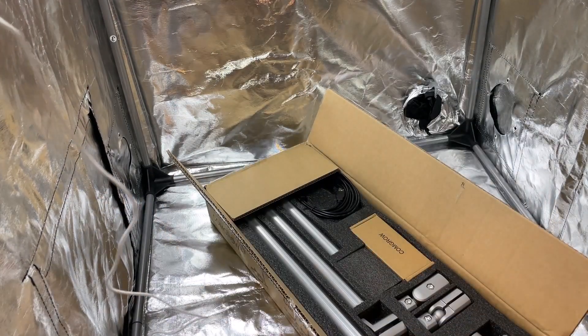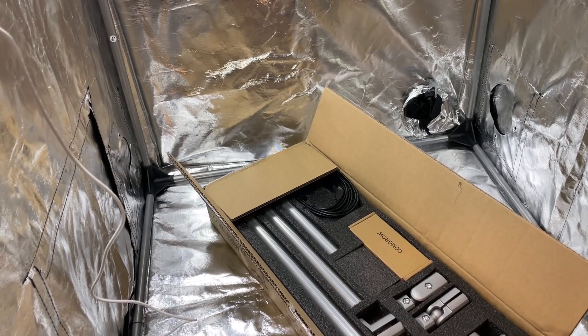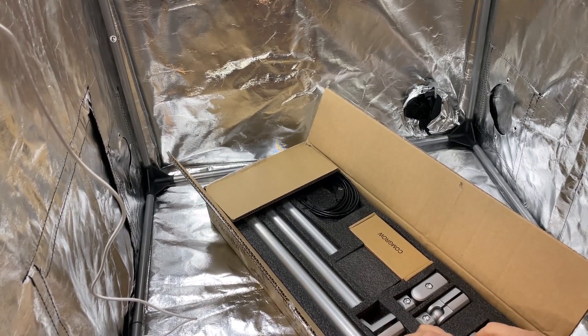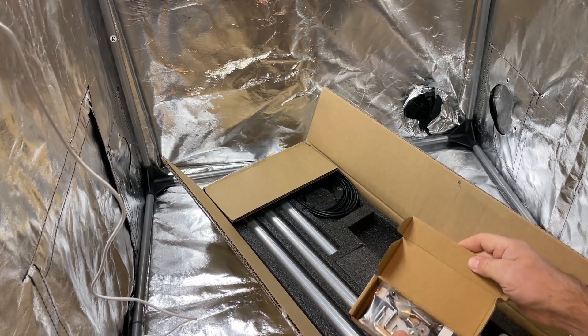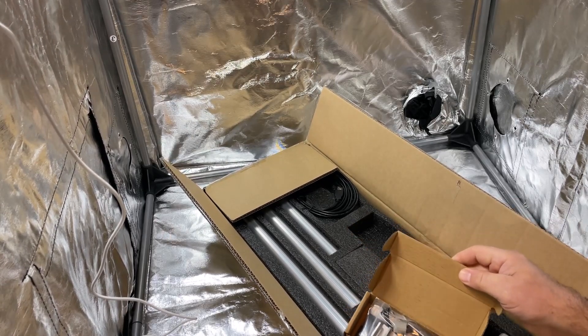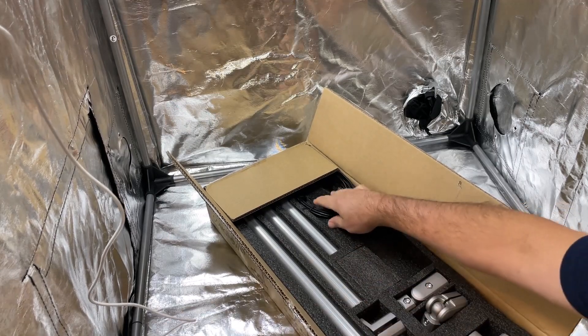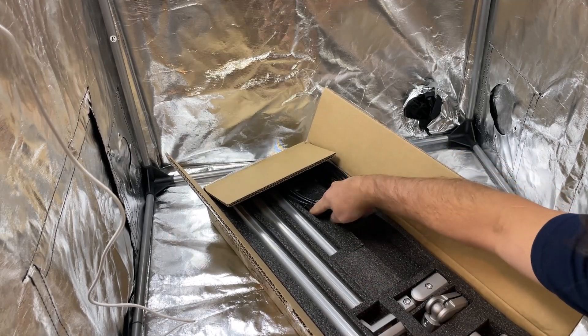Inside the box we have got the module. You can see there are attachments right here for the pipes that are gonna rise up. These are the parts that are gonna attach to the laser. Inside this box we have all the mounting hardware, and over here we have cables.